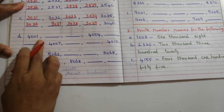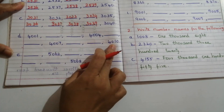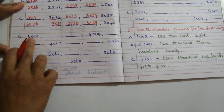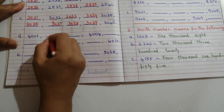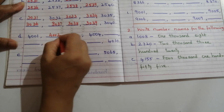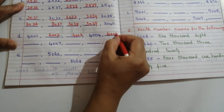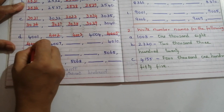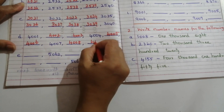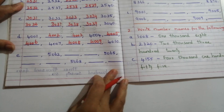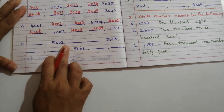Problem D: dash, 4001, dash, dash, 4004, dash, 4007, dash, dash. Here also there is no change in the first three digits — change occurs only in the ones digit. So the sequence continues: 4001, 4002, 4003, 4004, 4005, 4006, 4007, 4008, 4009, and 4010.